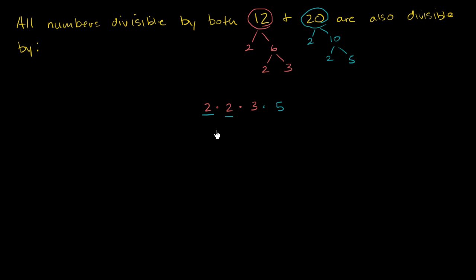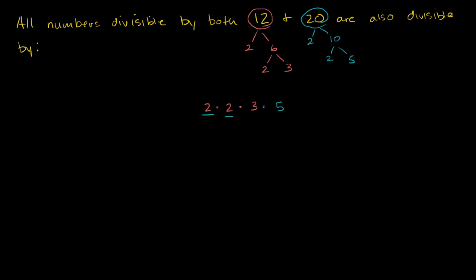Dividing by 20 is the same thing as dividing by 2 times 2 times 5. The 2's cancel out, the 5 cancels out, and you're just left with a 3 — so it's clearly divisible by 20. And if you divide by 12, that's dividing by 2 times 2 times 3. Those cancel out and you're left with a 5. So it's clearly divisible by both. This number is 60 — it's 4 times 3 times 5.